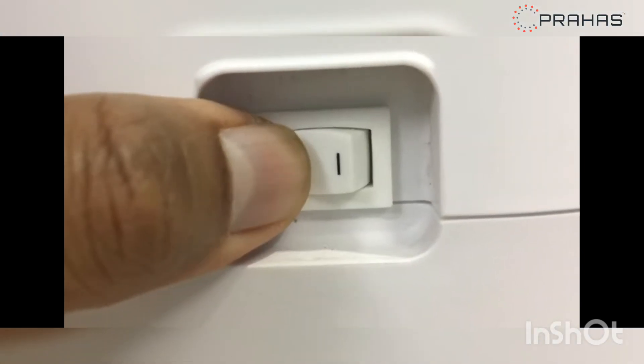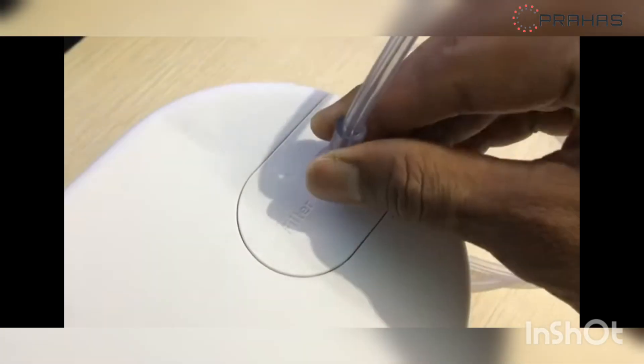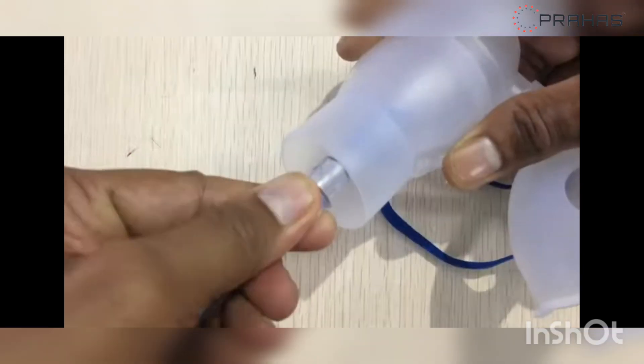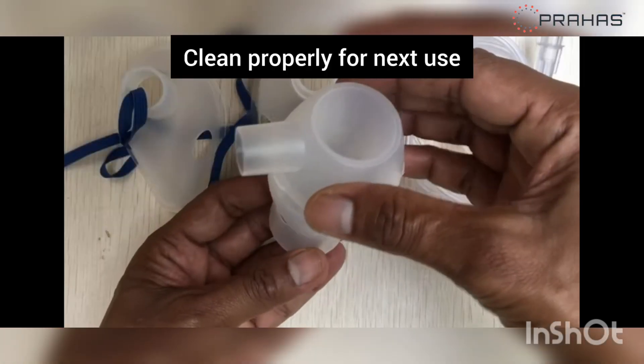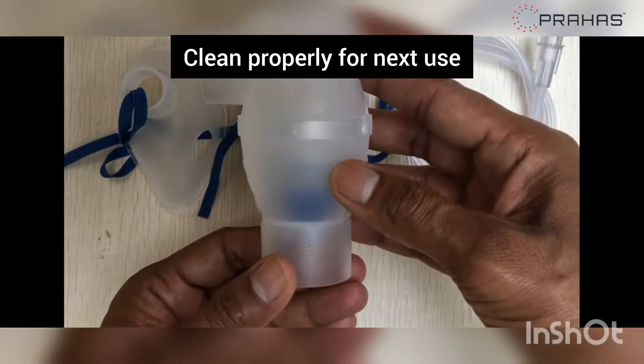Once the treatment is complete, turn the power off. Remove the tubing from the compressor and the nebulizer kit. Clean all parts for next use and store in a safe place.